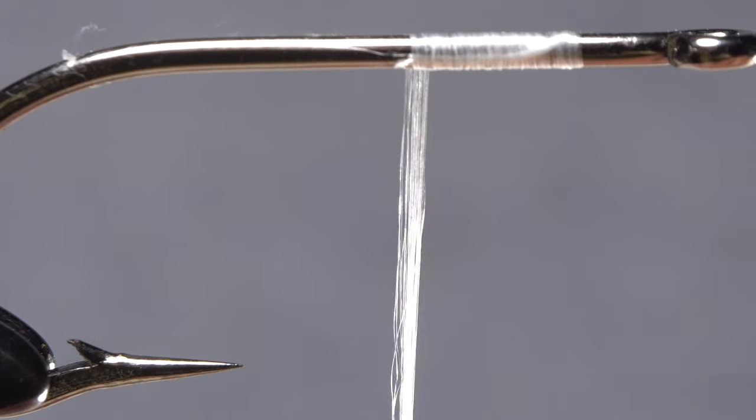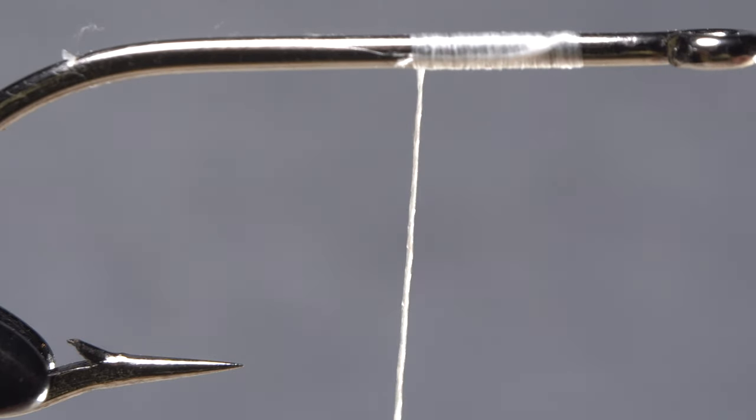They don't build up a lot of bulk on a fly. They also cord up really well, making them stronger, thinner, and somewhat grippier.